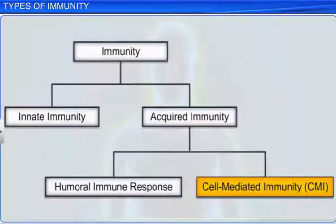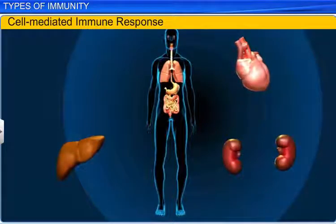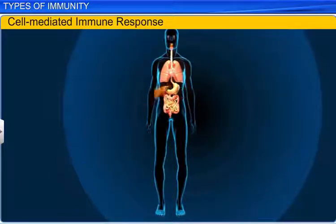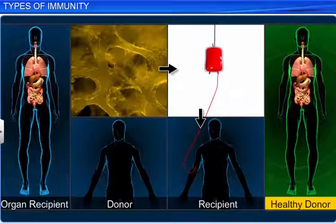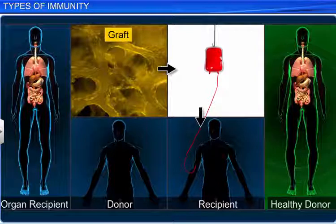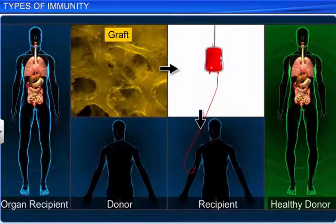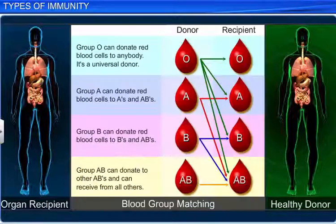The cell-mediated immune response can be best understood with the example of an organ transplant. When organs like the eye, heart, kidney, or liver fail, organ transplant is the only remedy. Thus begins the search for a suitable, healthy donor for transplantation. This is important because grafts or transplants cannot be made from just about any source, as the body will reject those grafts sooner or later. To find a perfect match, tissue matching and blood group matching are conducted before a transplant.